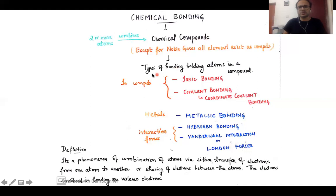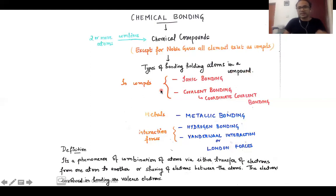We are going to look into the types of bonding that hold the atoms in a particular compound. Many of you are familiar with this chapter because you have studied these things briefly in your 11th and 12th standards. There are two basic types of bonding involved in the formation of compounds: ionic bonding and covalent bonding.